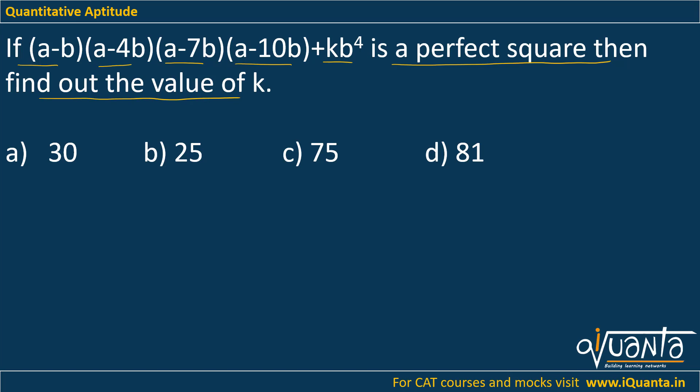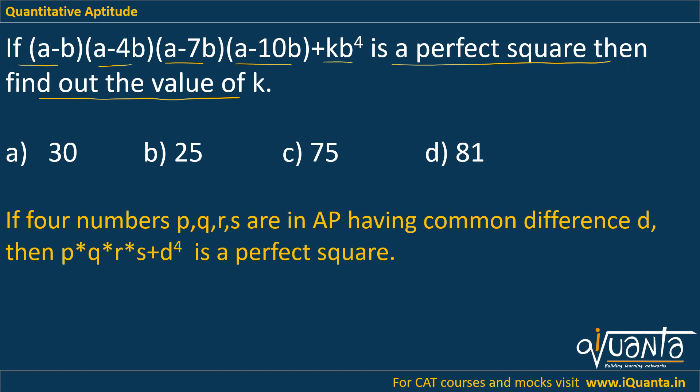So instead of that, we have a rule which will save you a lot of time. The rule is: if four numbers p, q, r, s are in AP having common difference d, then p*q*r*s + d^4 is a perfect square.